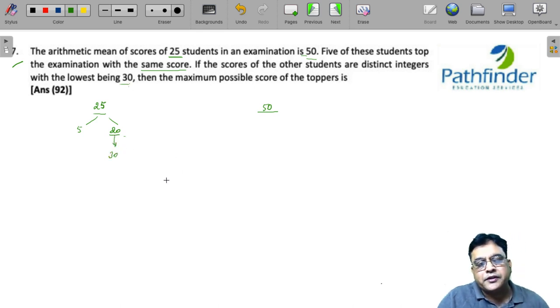With 30 being the first integer, so the first person will have 30, the second person will have 31, the third person will have 32, and so on till 49. 30 to 49 are 20 students.